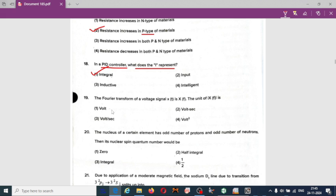Next question: Fourier transform of voltage signal x as a function of t is x as a function of f. The unit of x as a function of f is option two, volt-second is correct.